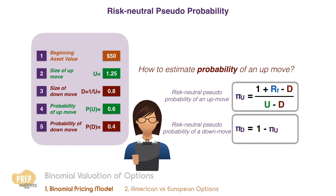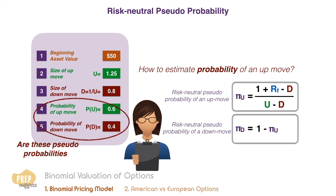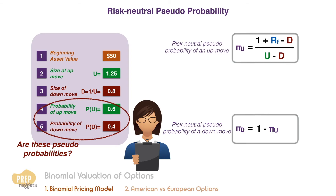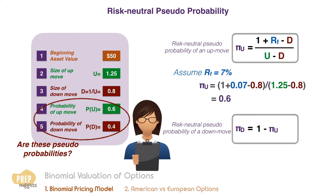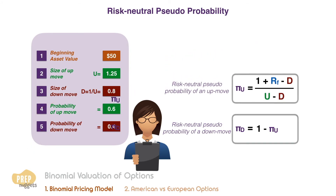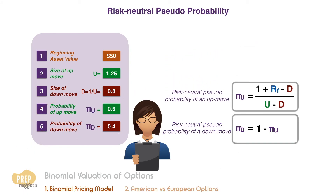Let's quickly determine if the probabilities quoted by the analyst are pseudo-probabilities. Assuming a 7% risk-free rate, let's calculate the risk-neutral pseudo-probability of an up move. Plugging in the figures into the formula we get pi U as 0.6 and pi D as 0.4. So indeed the probabilities from the analyst are pseudo-probabilities.